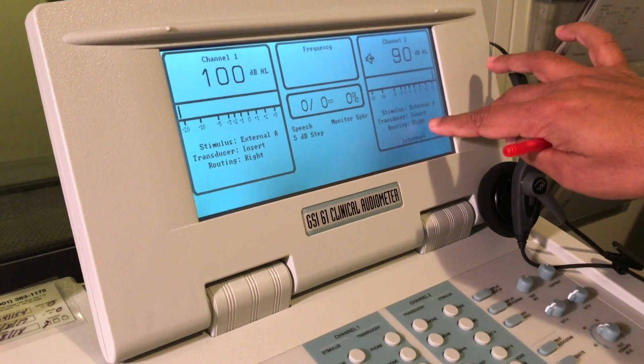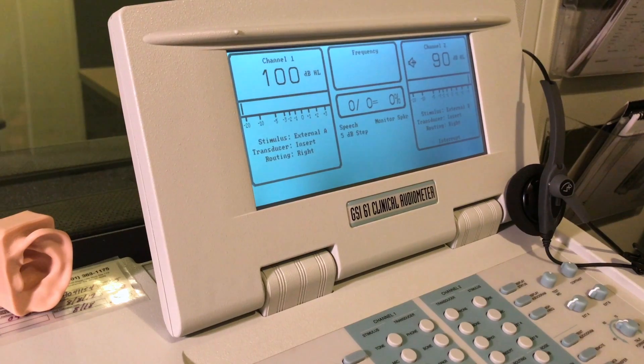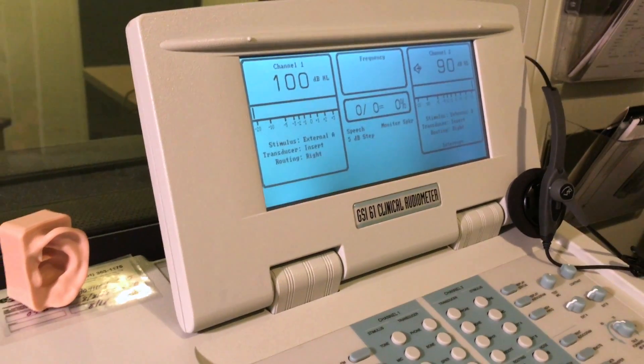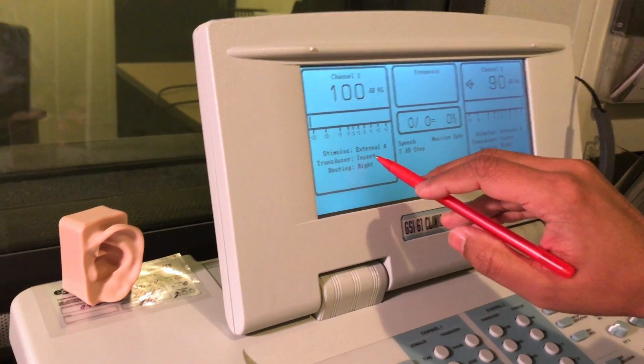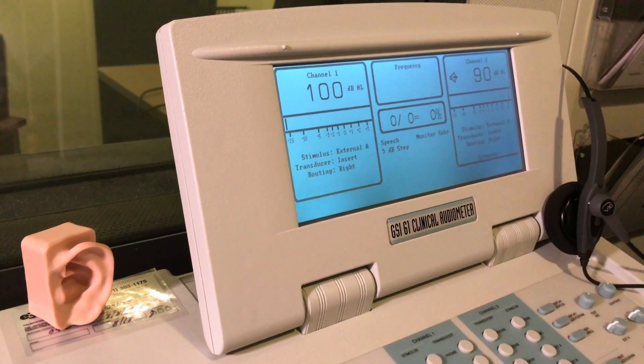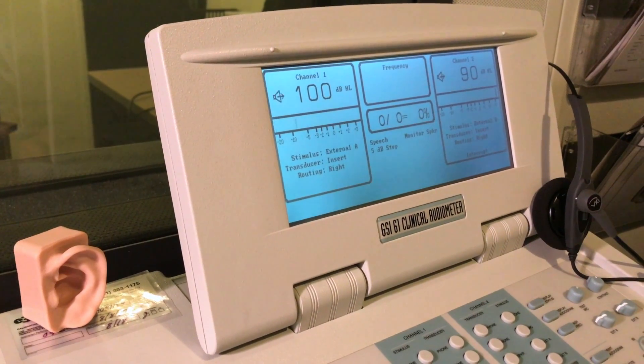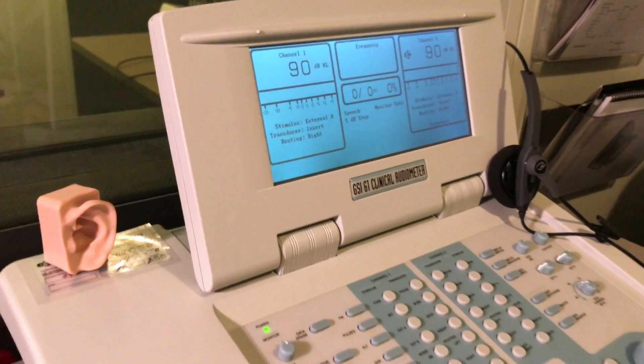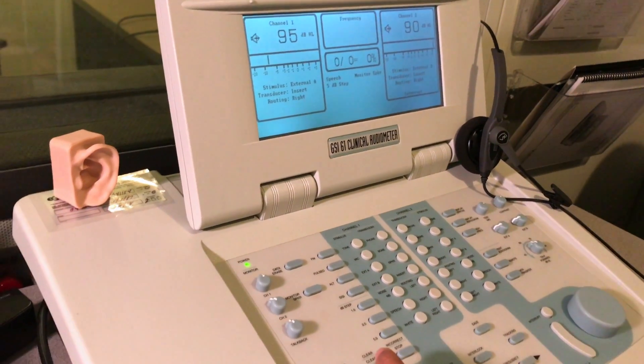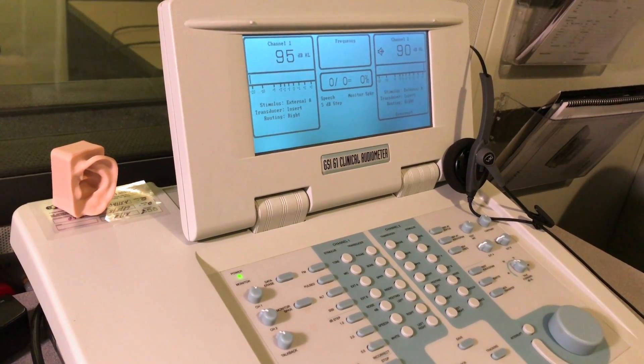Press interrupt so now the noise is routed to the right ear. All you need to do now is measure the person's threshold using the tone in the CD. We're selecting external A insert and the tone is going to the right ear. Use channel 1 and play the tone. Let's just assume that the person's threshold now is at 95 dB. Mark that on your audiogram.